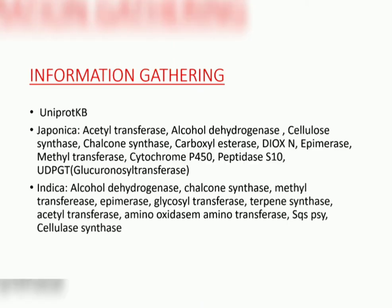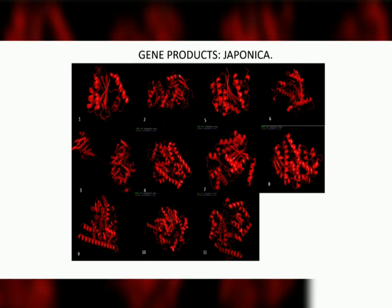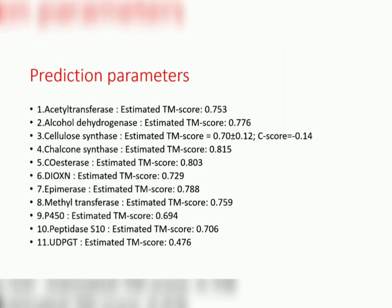Out of all the gene products in both species, 11 each were annotated in UniProt and taken for the study. None of the proteins of Japonica had 3D structures available in PDB, so we had to model these proteins. First we tried the SwissModel server, which is a homology-based protein modeling server, but we encountered an issue because the proteins were coming out fragmented. To circumvent this issue, we went with TR-Rosetta and I-TASSER, which are ab initio or threading-based protein modeling servers, and the models obtained were satisfactory.